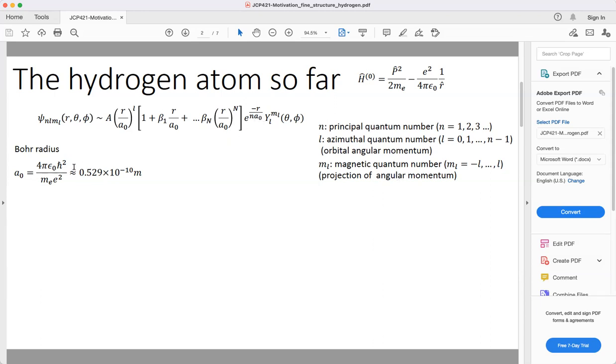a₀ is the Bohr radius and gives the characteristic length of the hydrogen atom. In particular, it gives the most likely radial distance at which you'll find the electron in the ground state.